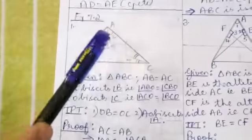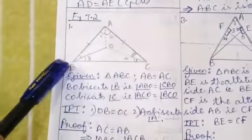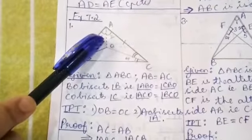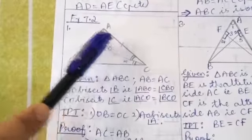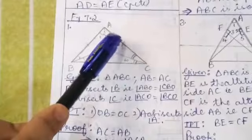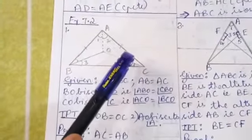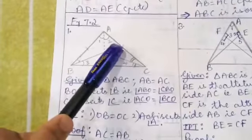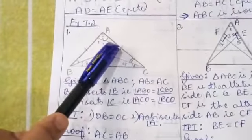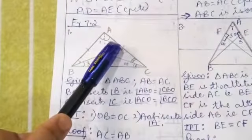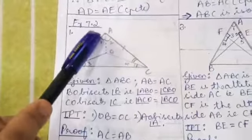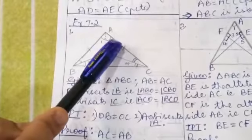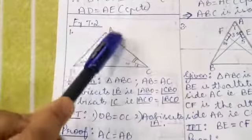Angle A of triangle AOB is angle 1, and angle A of triangle AOC is angle 2. Since the triangles are congruent, angle 1 equals angle 2. This clearly means that the line segment AO bisects the vertical angle A.